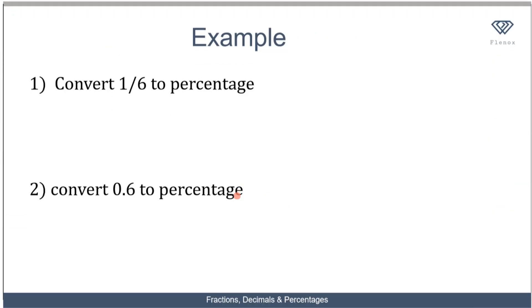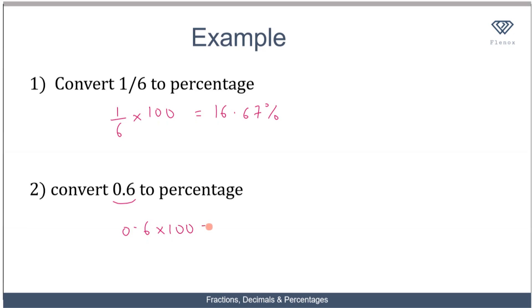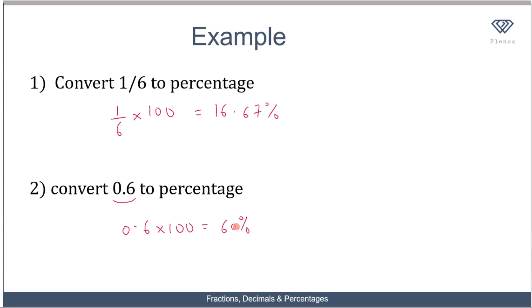For example, to convert 1 over 6 to a percentage, multiply by 100, and the answer is 16.67 percent. To convert 0.62 to a percentage, multiply by 100, which gives 62 percent. That pretty much sums up our discussion on percentages.